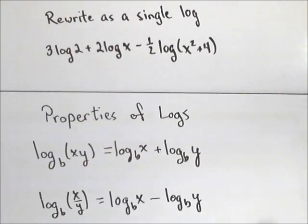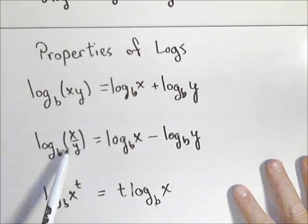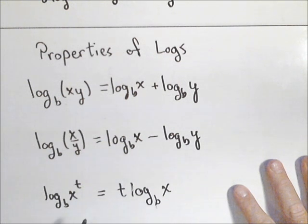our properties are we have the product to sum, the quotient to difference, and the exponent out front.